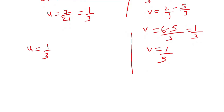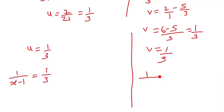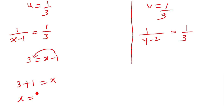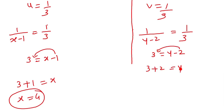Since u = 1/(x-1) = 1/3, cross-multiplying gives x - 1 = 3, so x = 4. Since v = 1/(y-2) = 1/3, we get y - 2 = 3, so y = 5. We have found our answer: x = 4 and y = 5.